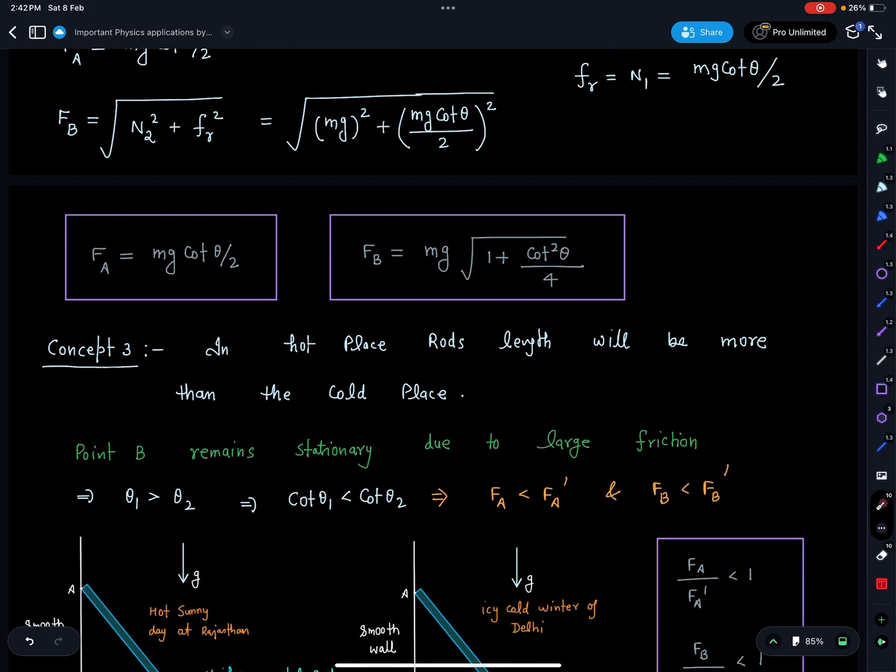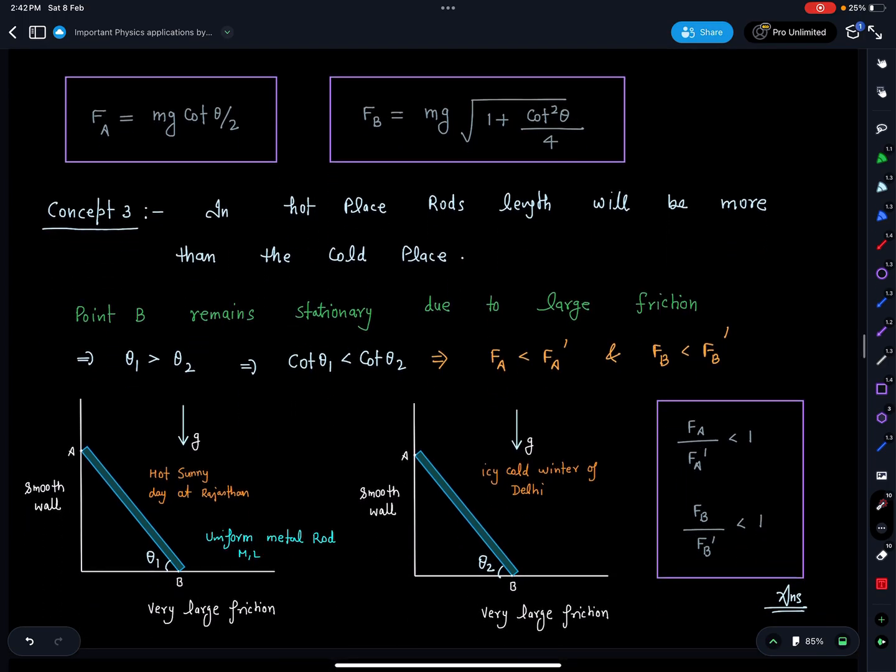Third concept I have already explained to you: that hot places, rod's length will be more and in cold place the rod's length will be lesser. That means these angles are different. And for equilibrium these angles are different. So when length of the rod is more, this theta 1 is going to be more because point B is fixed. Theta 2 will be less. A is moving slightly down and A is moving slightly up at higher temperature and lower temperature.